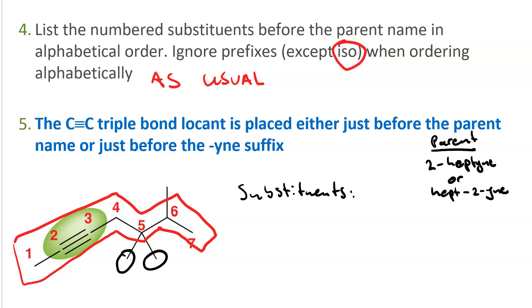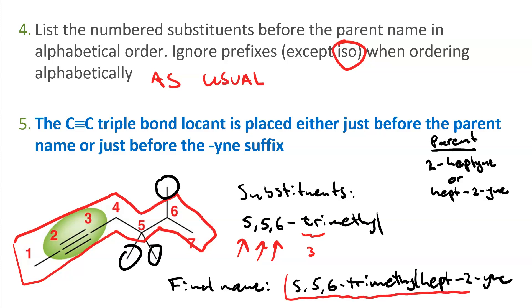As far as substituents, we have these three methyl groups. Two on carbon-5 and one on carbon-6. Each substituent gets a locant. And because there are three methyl groups, it's trimethyl. So, for the final name, we've got 5,5,6-trimethyl-hept-2-yne, or we could do 5,5,6-trimethyl-2-heptyne.